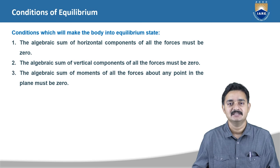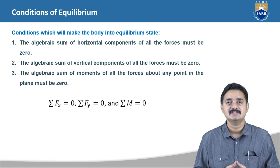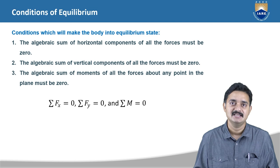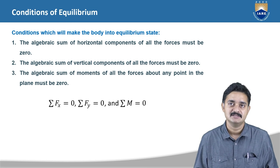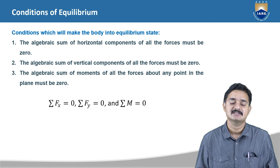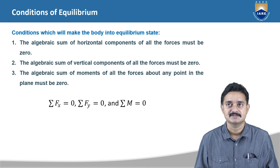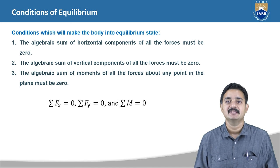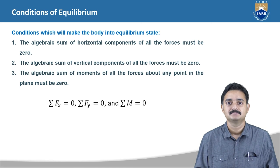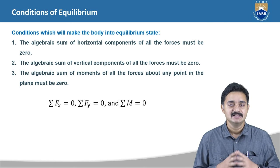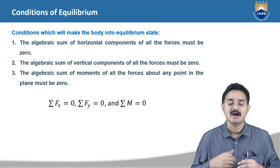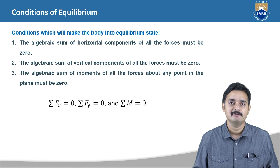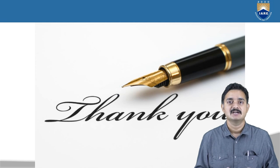So, we consider the equations: sigma Fx equals zero, sigma Fy equals zero, and sigma M equals zero. Where sigma Fx is the sum of all horizontal component forces, sigma Fy is the sum of all vertical component forces, and sigma M is the sum of all moments applied by the forces acting in the system. This is how the conditions of equilibrium are considered, and how to apply them in problem solving will be demonstrated through solving a number of problems. Thank you.